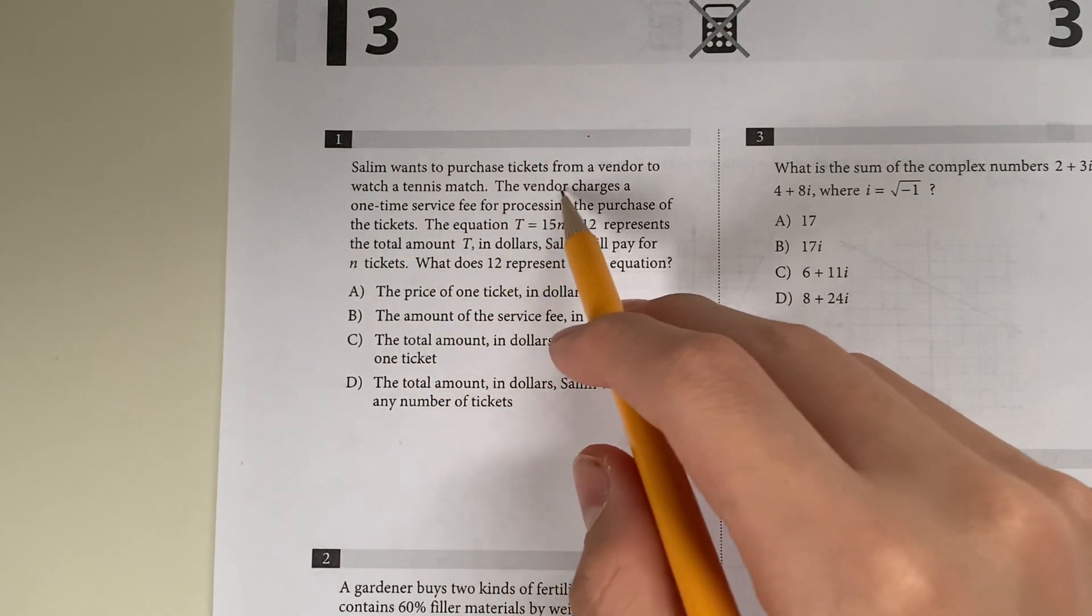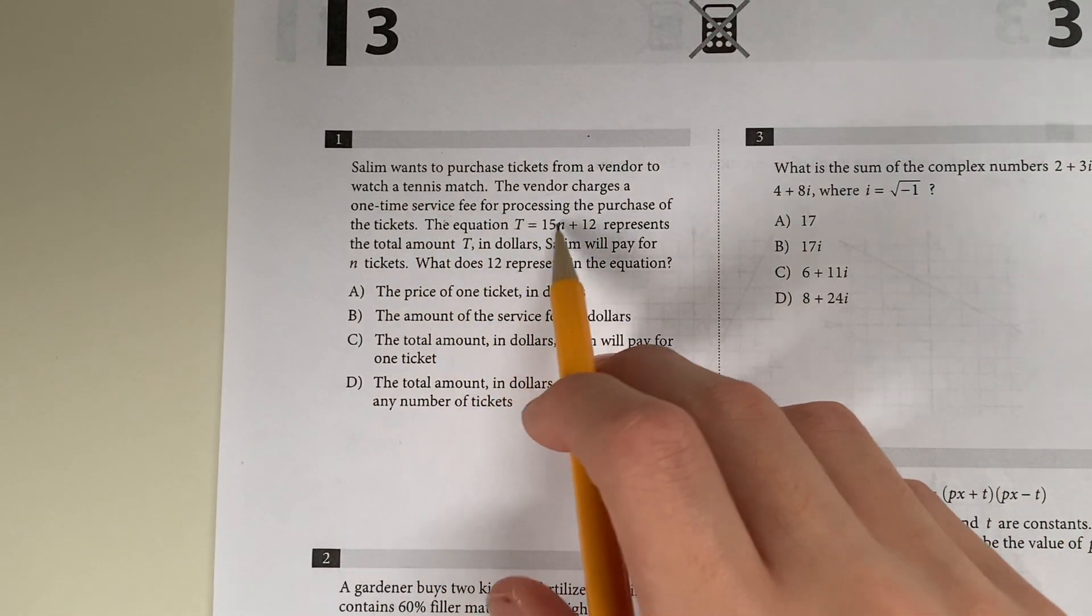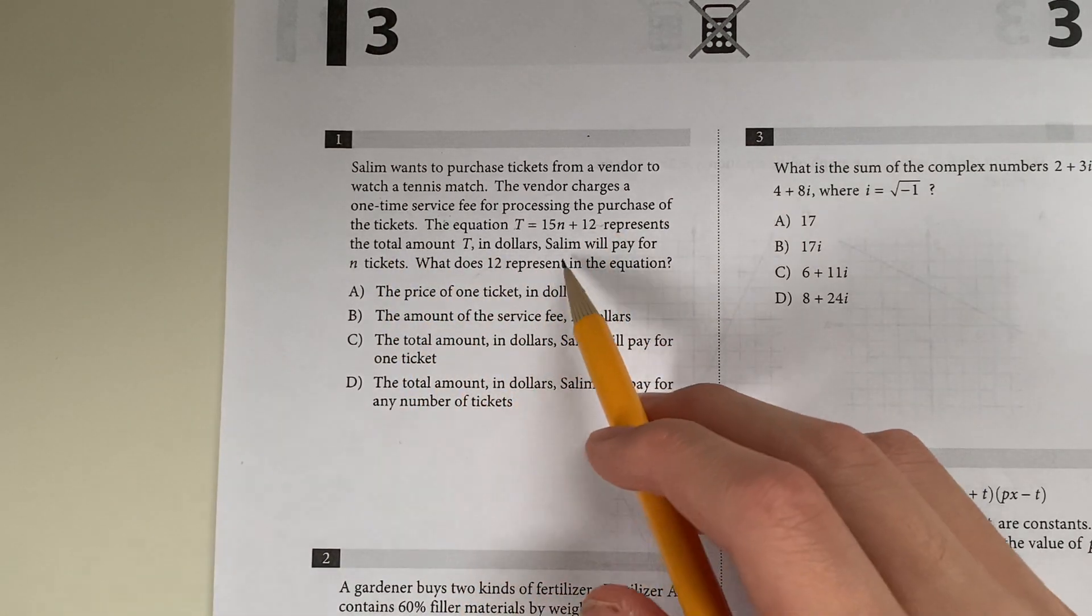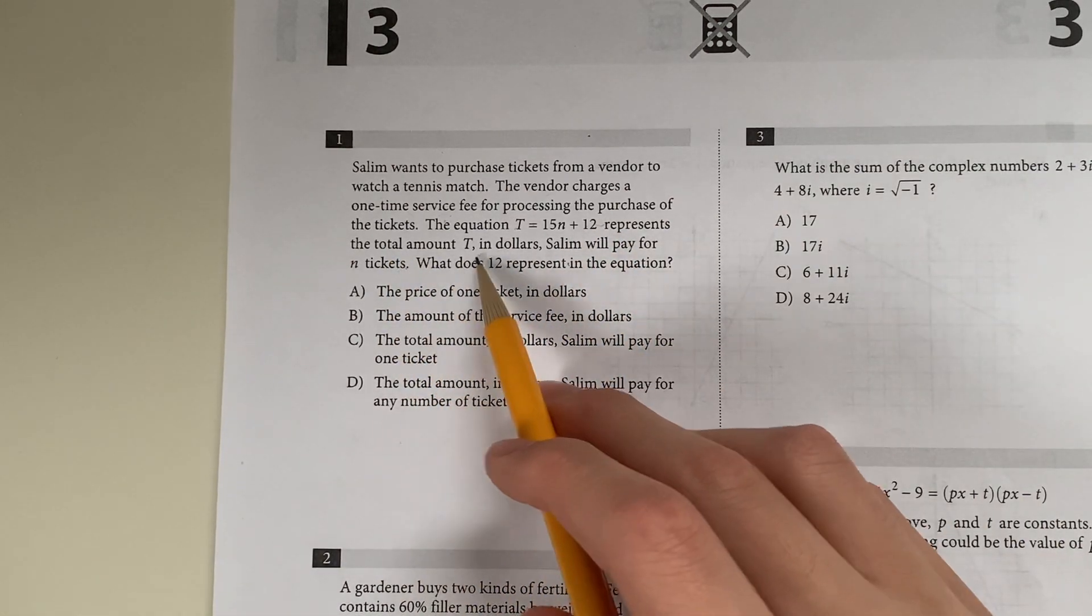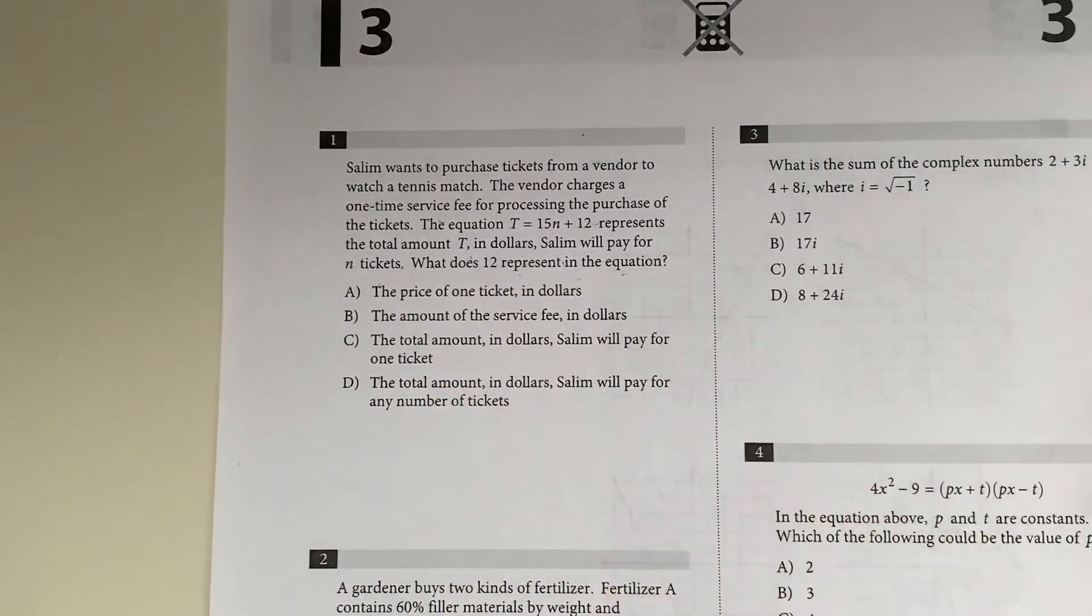Salim wants to purchase tickets from a vendor to watch a tennis match. The vendor charges a one-time service fee for processing the purchase of the tickets. The equation T equals 15N plus 12 represents the total amount Salim will pay for N tickets.